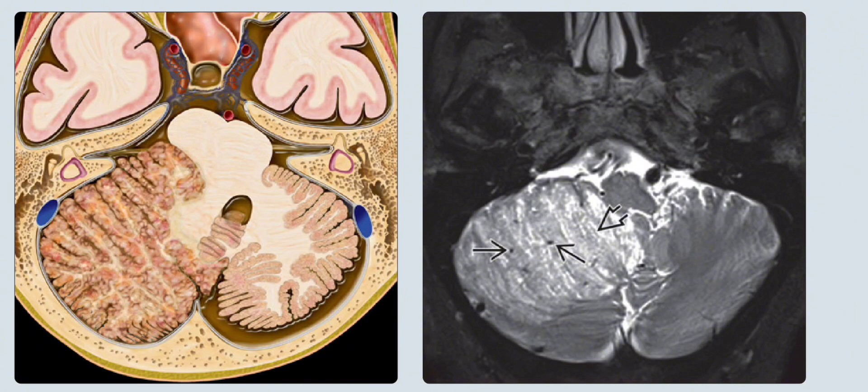Now starting with the cases of Lermitte-Duclos disease. On the left is the axial graphic showing the thickened and irregular cerebellar folia in the right cerebellar hemisphere, resulting in enlargement of the hemisphere and mass effect upon the brain stem, which is quite typical of Lermitte-Duclos disease. On the right is the axial T2-weighted MRI in a 76-year-old man with non-specific headaches, showing a hyperintense right hemispheric mass.